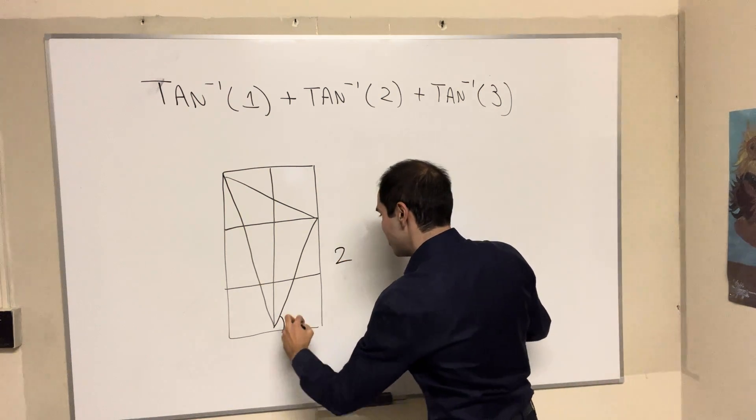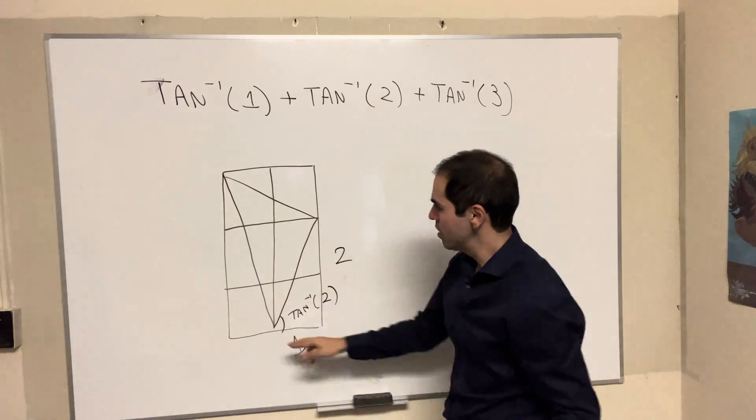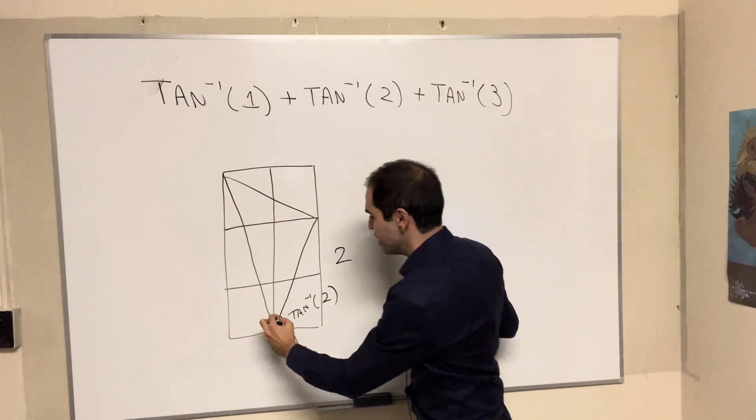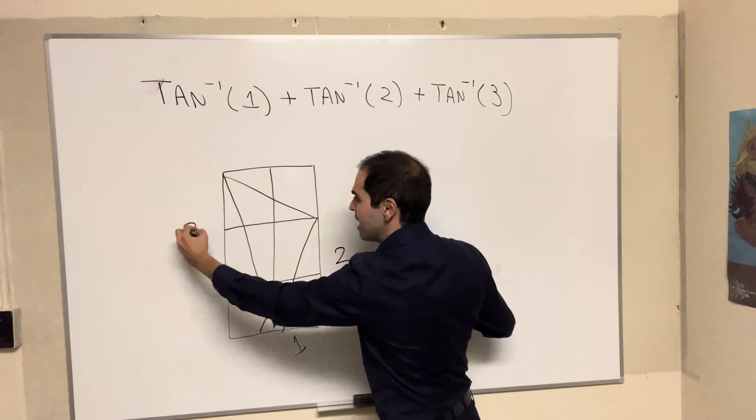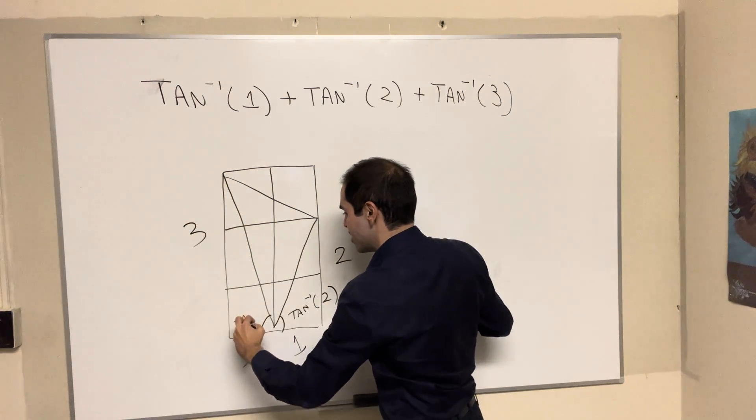So again, 2 and 1. So this is arctangent of 2. What is this angle here? Well, once more, the rise is 3, the run is 1. So this is arctangent of 3.